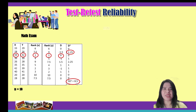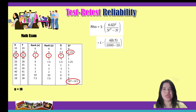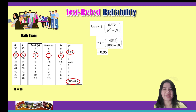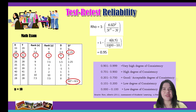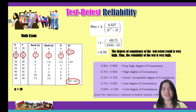Once done, we substitute the values into our Spearman rho formula. We got 1,000 since our n equals 10 and the cube of 10 is 1,000. As we do the calculation, the result is 0.95. Based on the table, the degree of consistency of the test-retest result is very high. Thus, the reliability of the test result is very high.